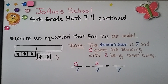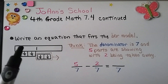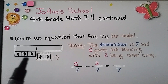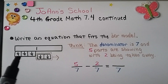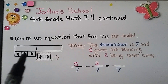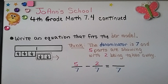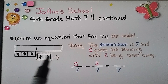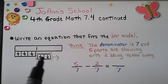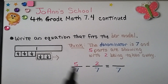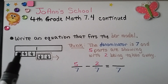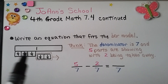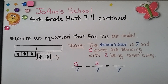Now we need to write an equation that fits the bar model. The denominator is 7 and 5 parts are showing with 2 being taken away. We have 5 sevenths minus 2 sevenths, and it equals the ones remaining: 3 sevenths.